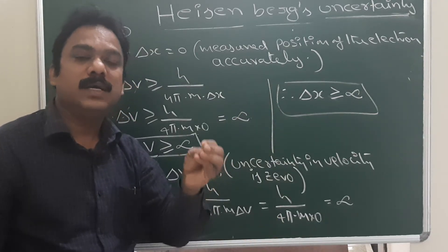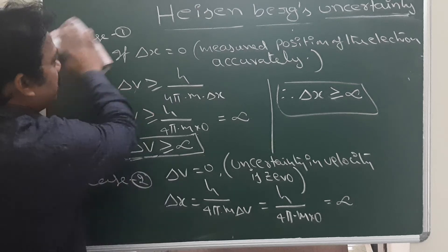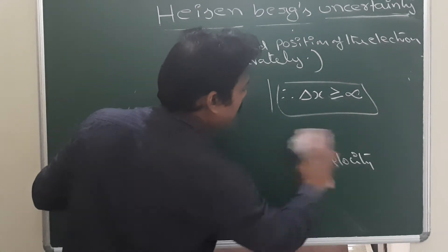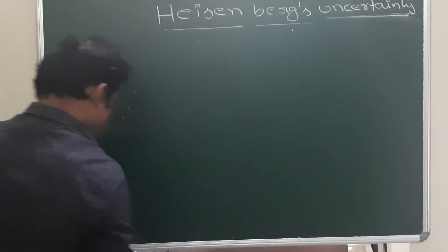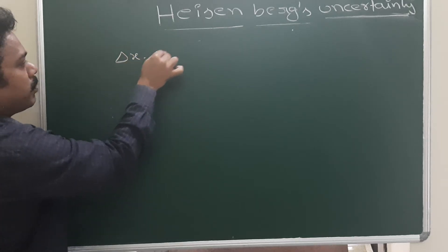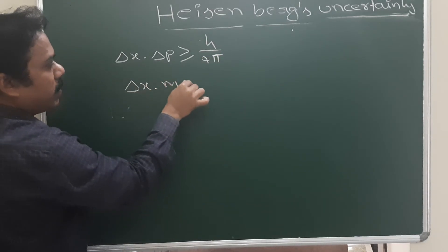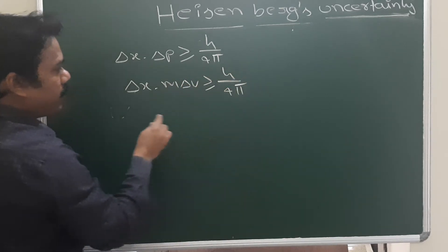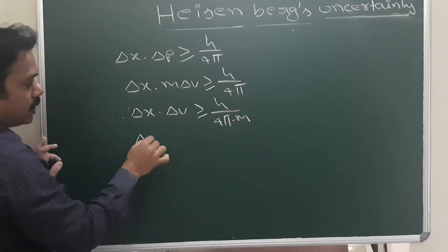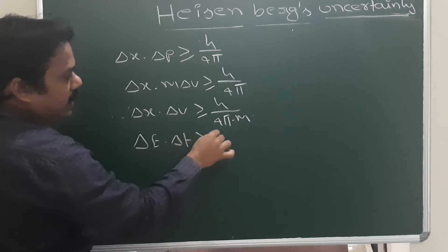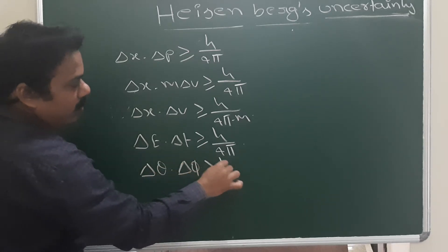That is Heisenberg's uncertainty principle. It can be expressed in different forms. The primary form is: delta x into delta p is greater than or equal to h by 4 pi.